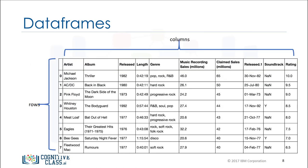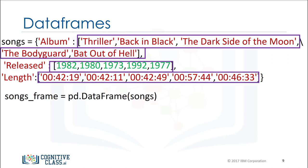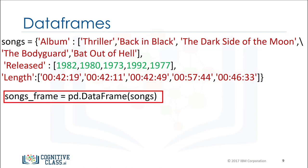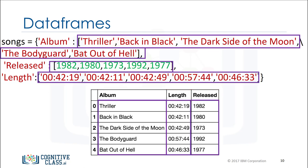A data frame is comprised of rows and columns. We can create a data frame out of a dictionary. The keys correspond to the column labels, and the values are lists corresponding to the rows. We then cast the dictionary to a data frame using the function DataFrame. We can see the direct correspondence between the table: the keys correspond to the table headers and the values are lists corresponding to the rows.